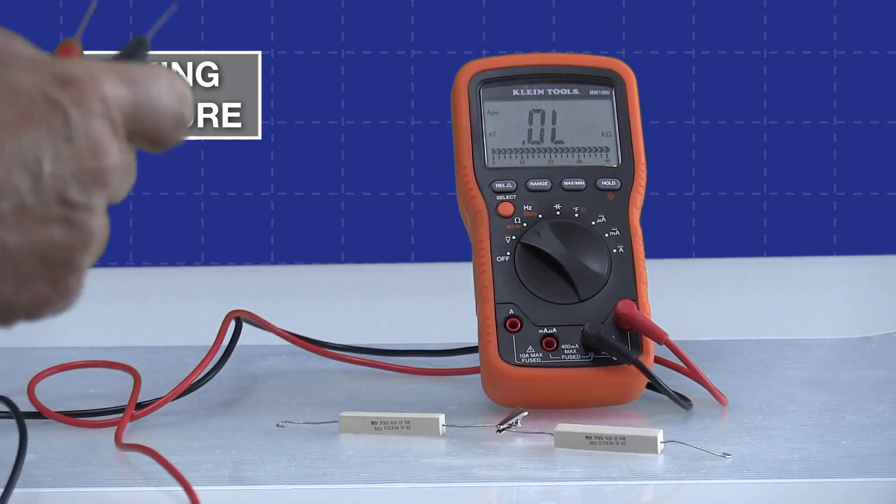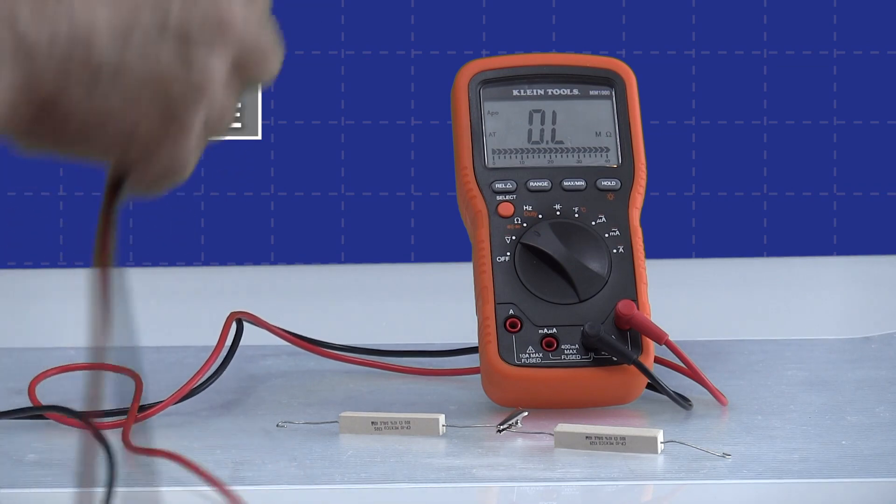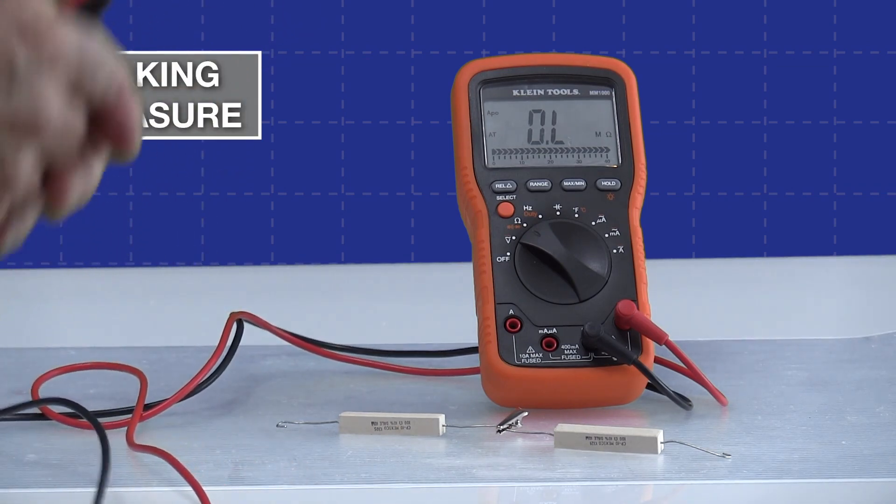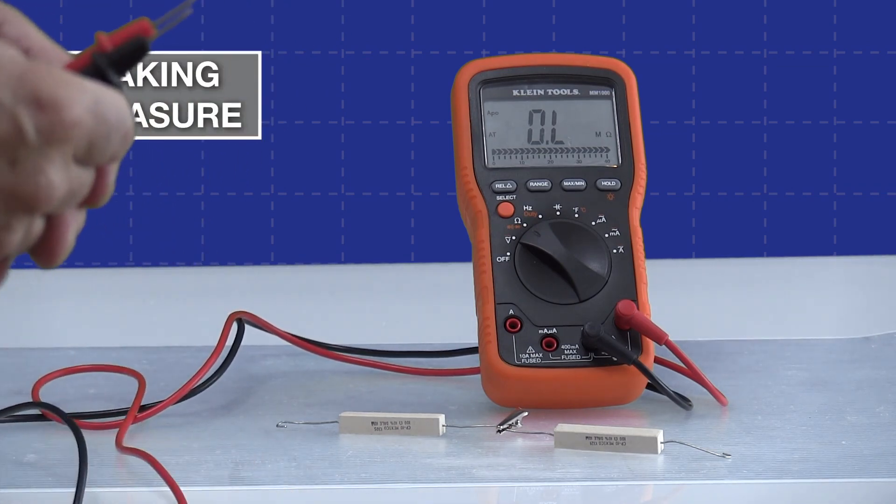So it's kind of a valuable feature if you need to, for some reason, blank out part of a reading that you want to so you can see what's going on with the other part of the circuit.